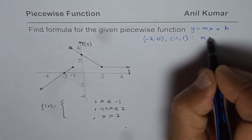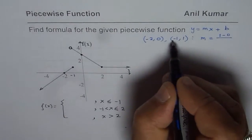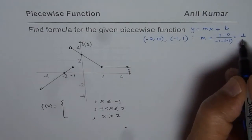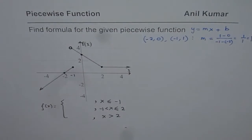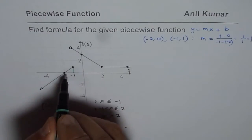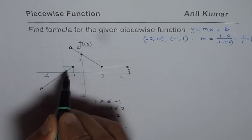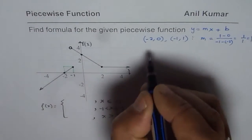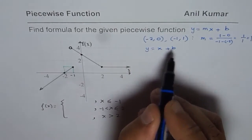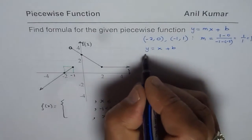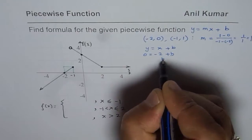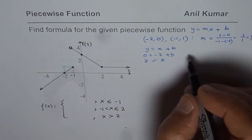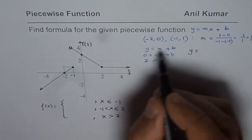Slope m is rise over run: one minus zero over minus one minus minus two, which is one over two minus one, giving a slope of one. You can also find rise over run directly from the graph — moving one unit up and one unit across gives slope one. Since the slope is one, we write y equals x plus b. To find b, replace x with minus two and y with zero: zero equals minus two plus b, so b equals two.